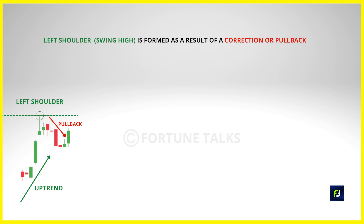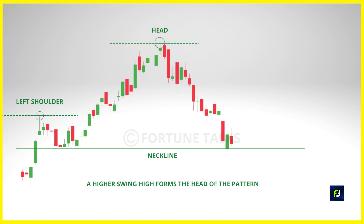The market then trades above the previous swing high forming a higher high. However, the sellers stay in control and push the price lower towards the previously formed swing low. The swing high formed as a result of this price action is the head of the pattern. The line connecting both swing lows forms a support level called the neckline. What we can observe here is that the uptrend structure of higher highs and higher lows is violated, but still we cannot guarantee that a reversal will happen because the price might trade sideways.